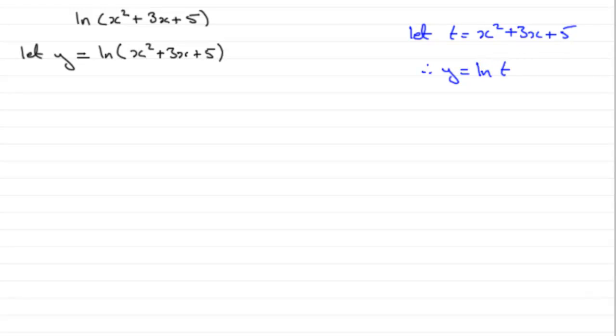We're going to use the chain rule to find dy by dx. The chain rule tells us that this is the same as dy by dt times dt by dx.